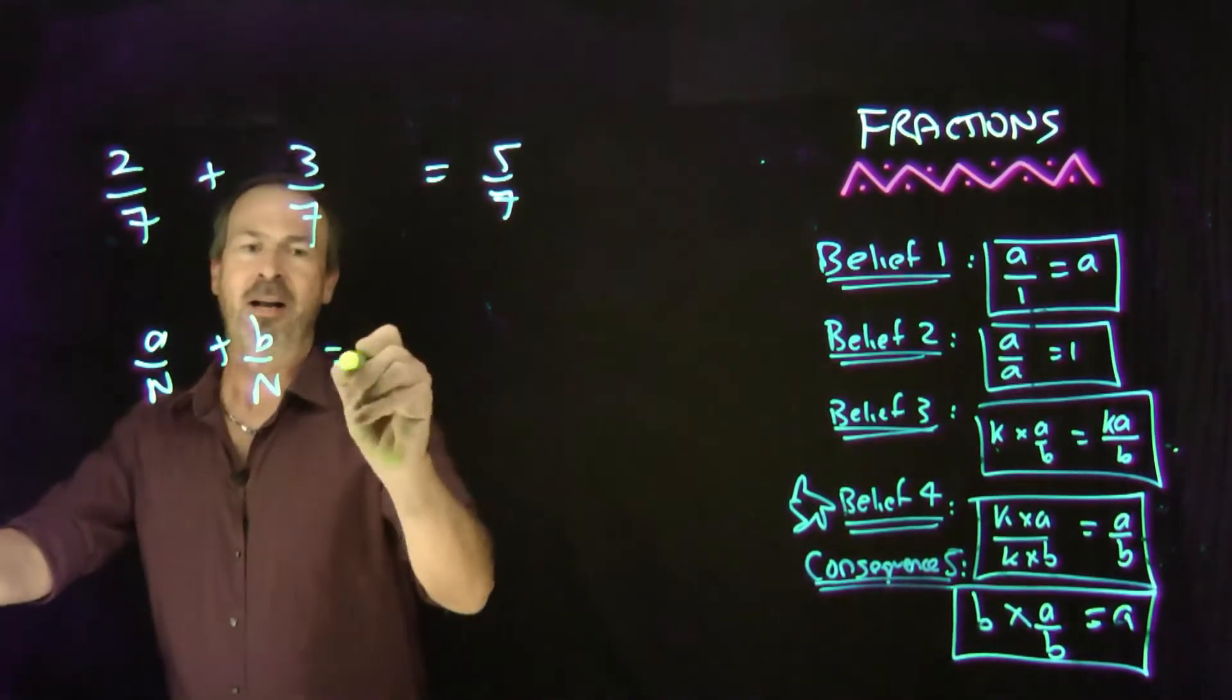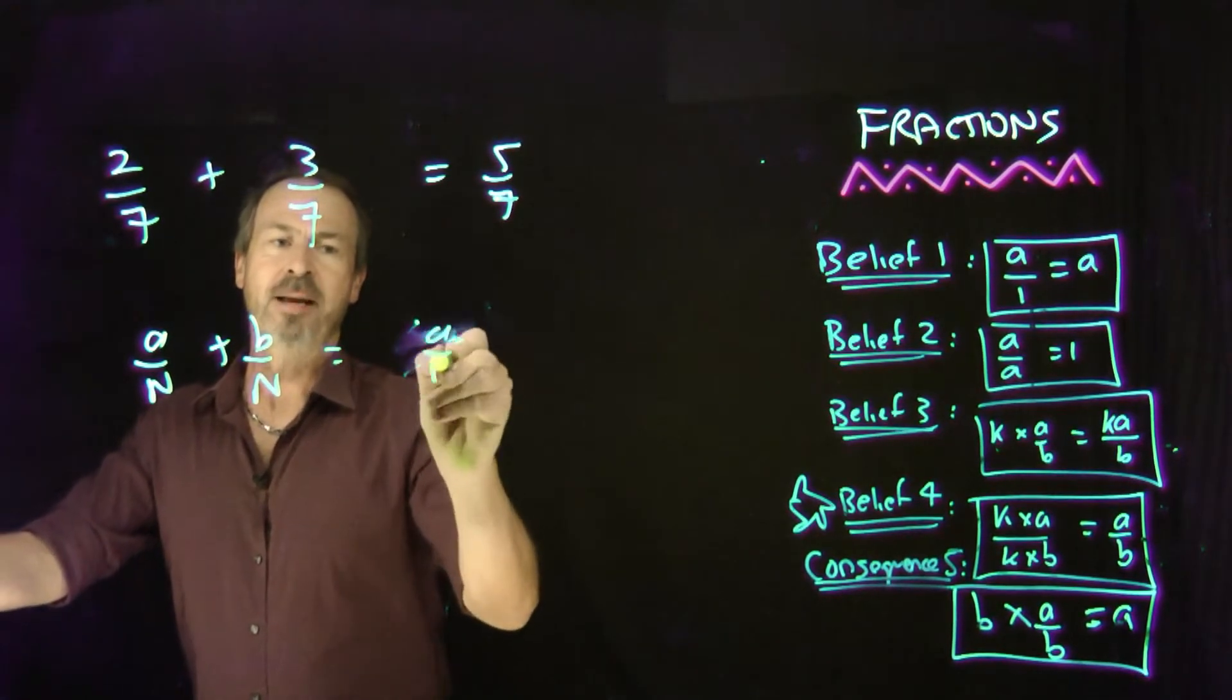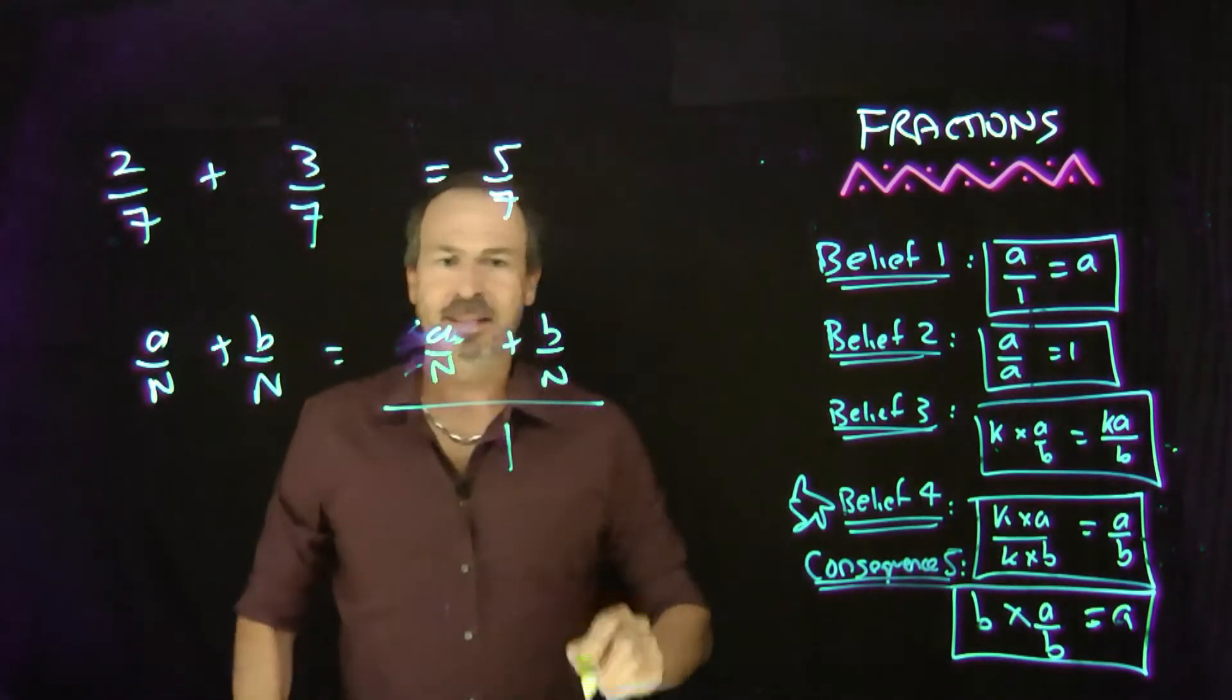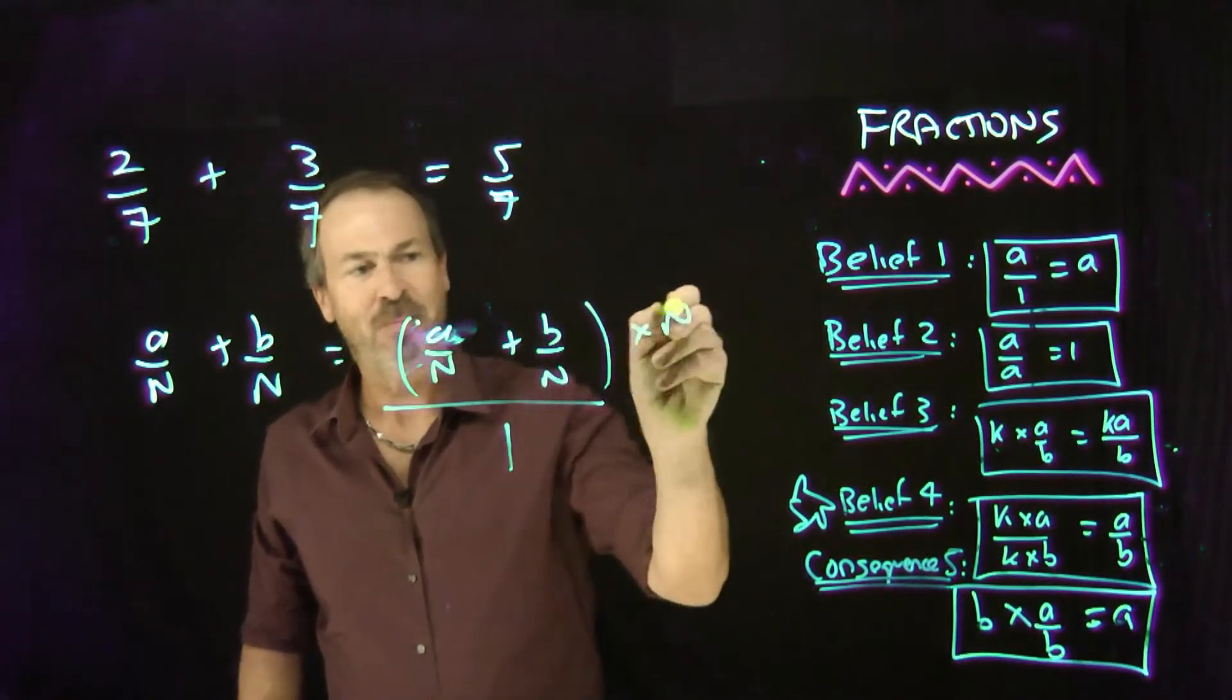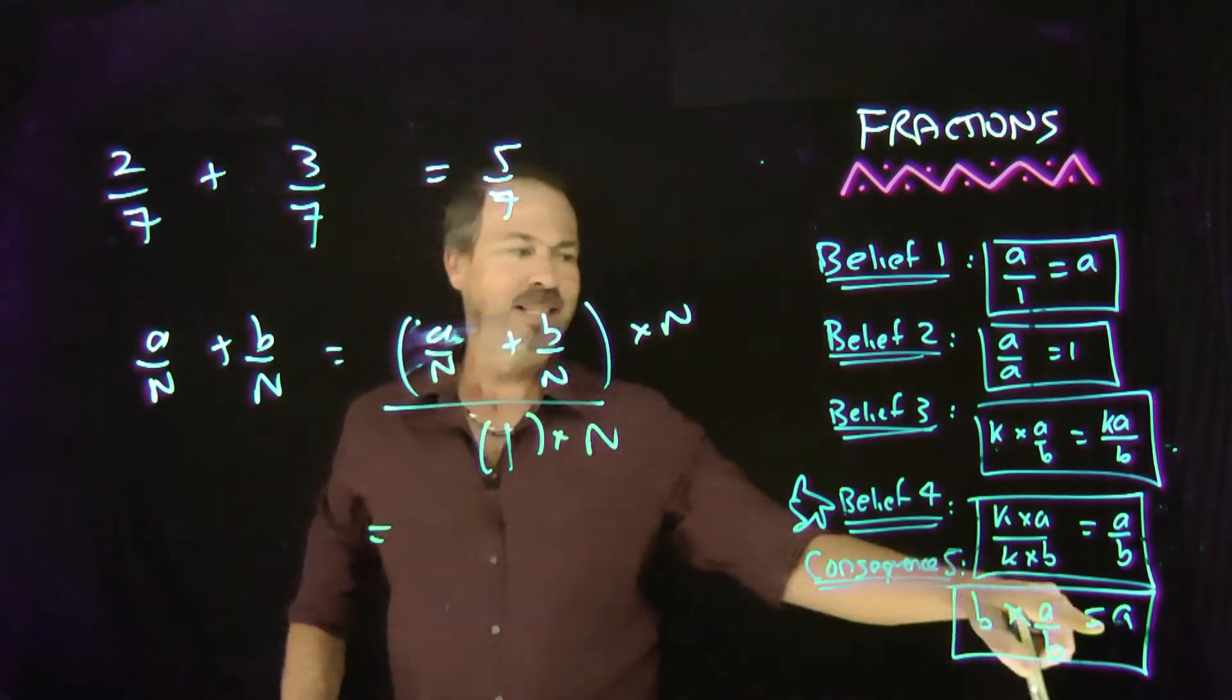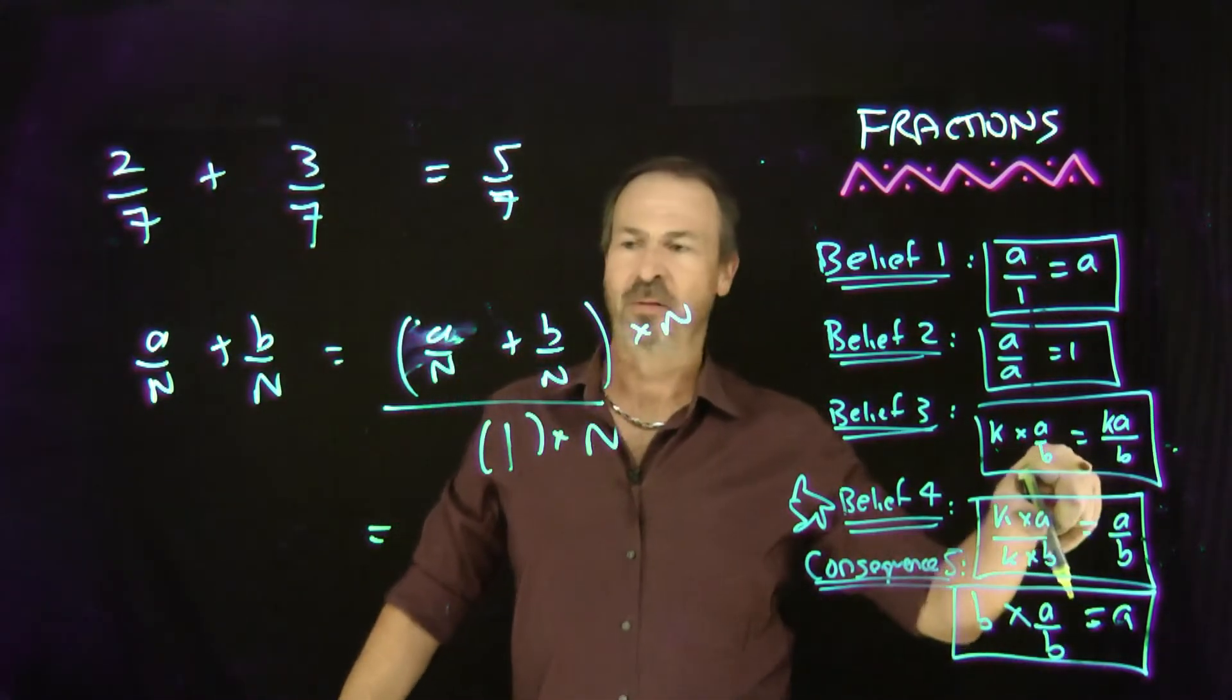Start by saying, oh, think of this as a fraction over 1. a/n plus b/n all over 1. I don't like nths. So let me multiply the top by n. Top by n and the bottom by n. Great. And now I can use this idea over and over again. Or this idea over and over again. Oh yeah, it's the bottom one, sorry.